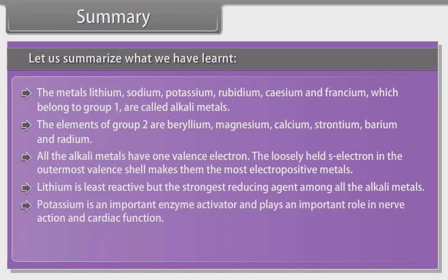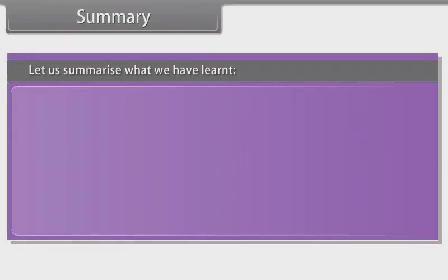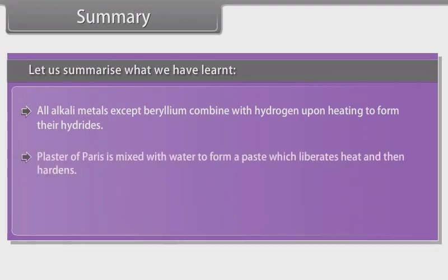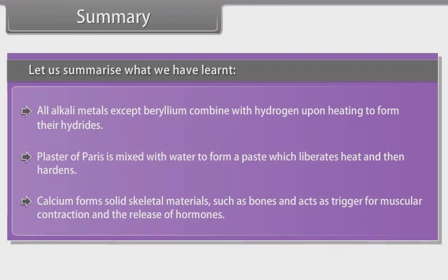The alkaline earth metals have two electrons in the S-orbital of the valence shell and are predominantly ionic. All alkaline earth metals except beryllium combine with hydrogen upon heating to form their hydrides. Plaster of Paris is mixed with water to form a paste which liberates heat and then hardens. Calcium forms solid skeletal material such as bones and acts as a trigger for muscular contraction and the release of hormones. Thanks for listening.